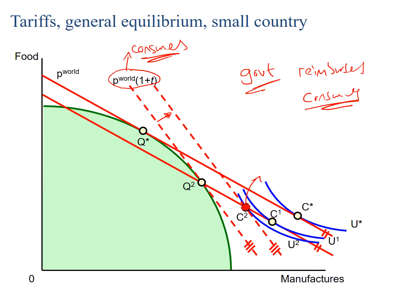When these two curves meet, we have what is called a balanced trade equilibrium. As we can see, the tariff has led to a reduction from the original utility levels down to utility levels at C2. Therefore a tariff has reduced welfare in the economy, and this agrees with the analysis in the partial equilibrium.